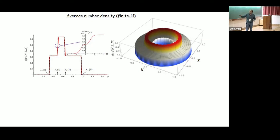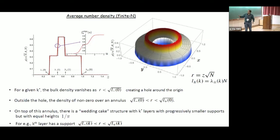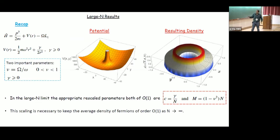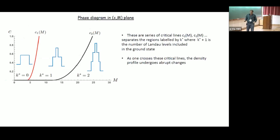The density profile doesn't have a random matrix connection, but there might be something in the fine features. At the edge of every layer there's a kink when you zoom in. It turns out that if you go to the second layer you get two kinks, and for the Nth layer you get N kinks. The location of the kinks of the Kth band coincide with zeros of the Kth Hermite polynomial. So this edge profile of the 2D fermion density can be connected to Hermite polynomials and random matrices.